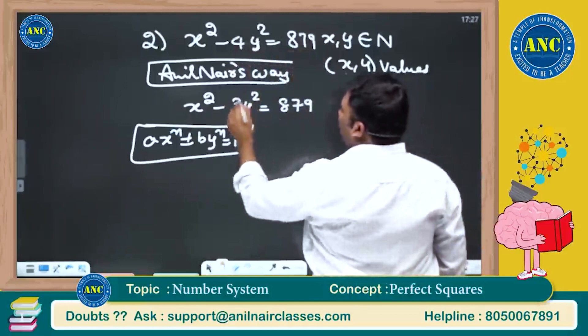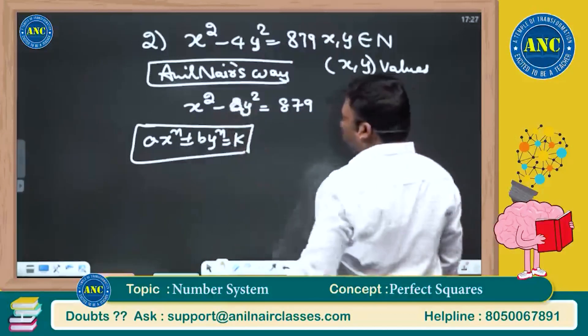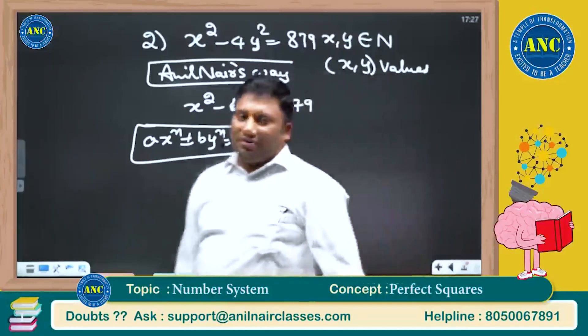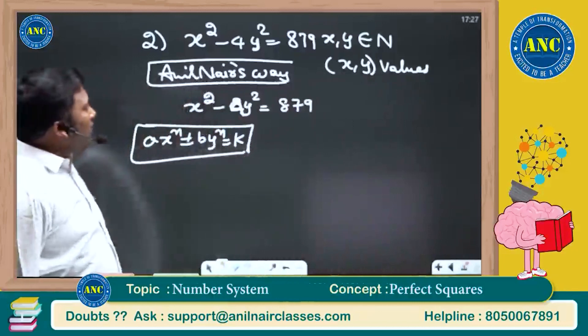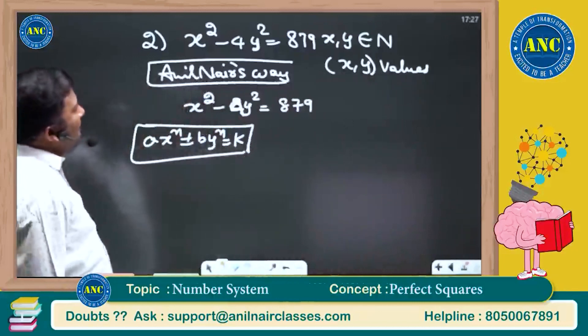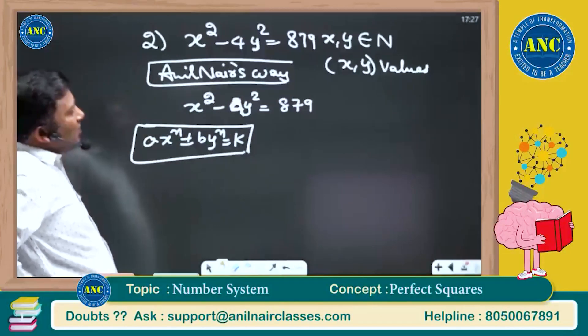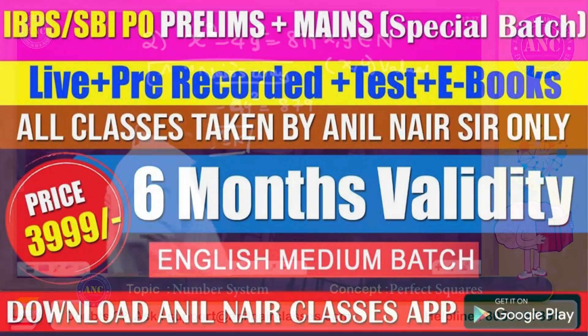Then I will do the same question by telling you the counter of the problem. x square minus 4y square equivalent to 879, x, y are natural numbers.